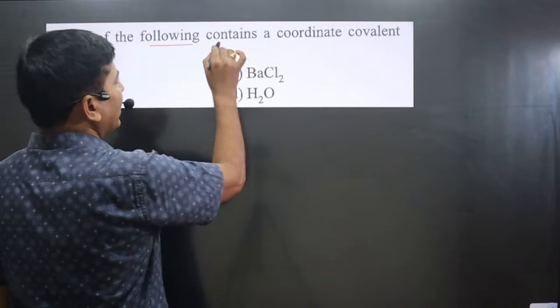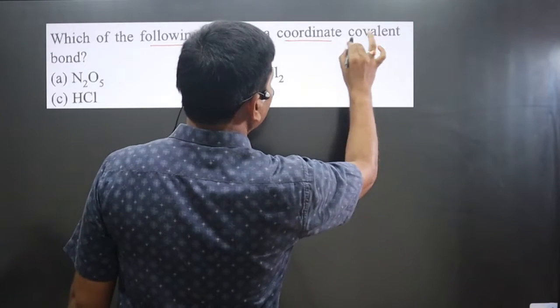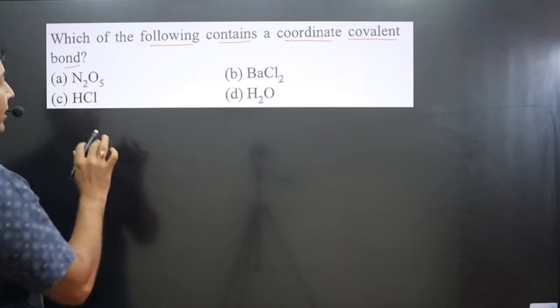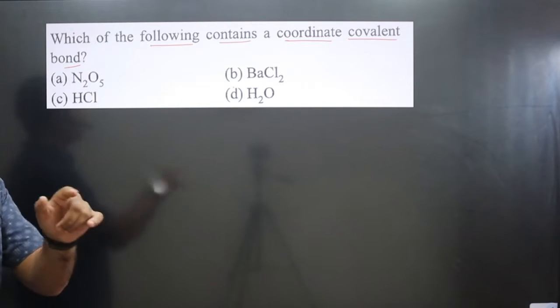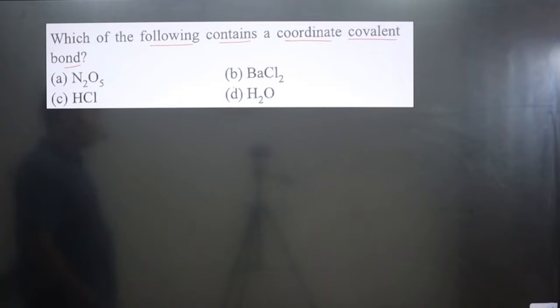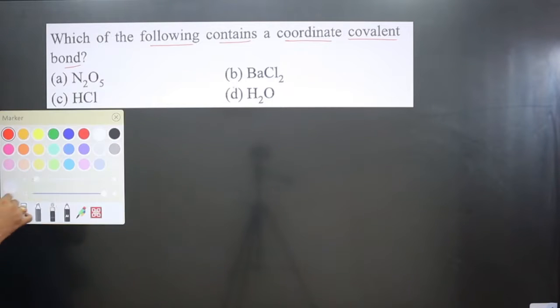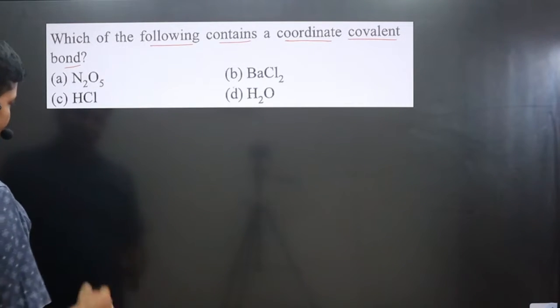The question asks which of the following contains a coordinate covalent bond. In the given compounds, we have to identify in which case coordinate as well as covalent bonds are present. We can draw the structure and then identify the type of bond. The first compound we have is N2O5.